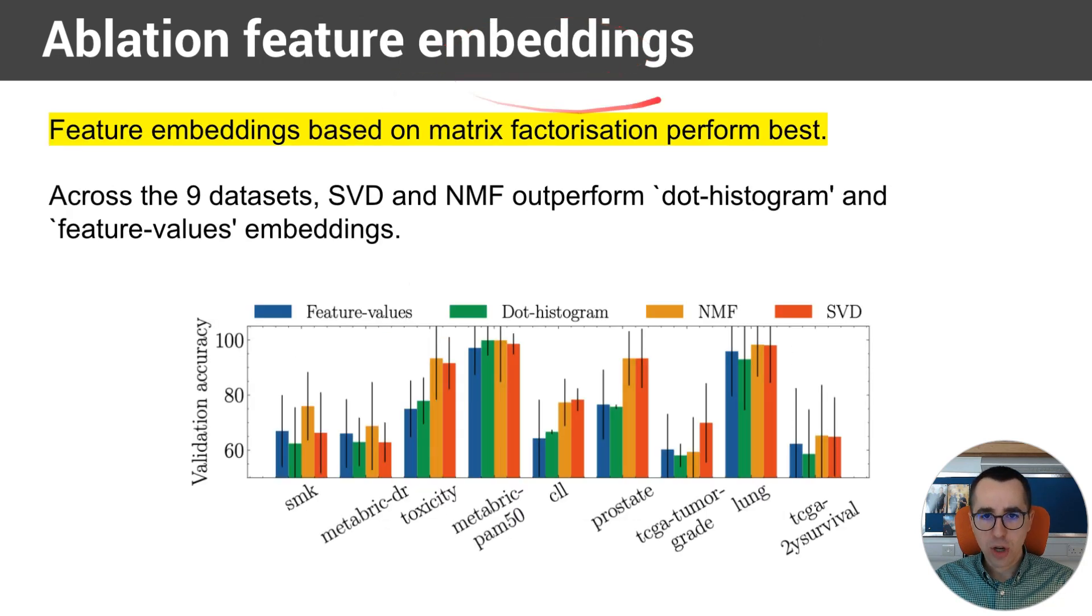We also perform an ablation on the feature embeddings. And we tried four different feature embeddings. One of them is a standard singular value decomposition, and the other one is a non-negative matrix factorization. While the other two are more histogram-based feature embeddings, the details are unimportant. The point is that the feature embedding significantly affects the performance of the method, and we found that matrix factorization-based, so for example, NMF and SVD, perform best across tasks.